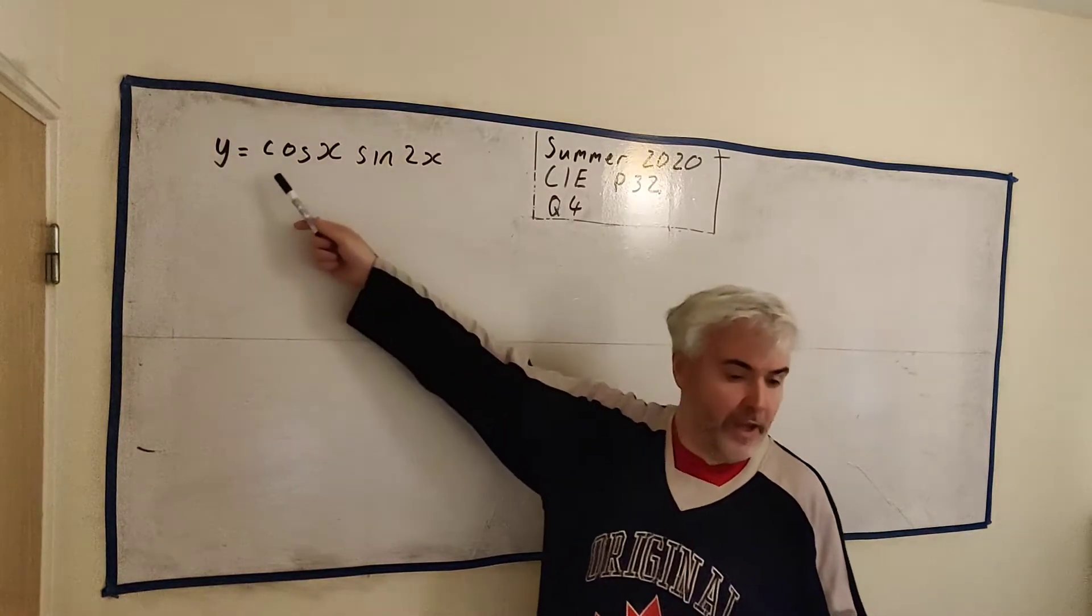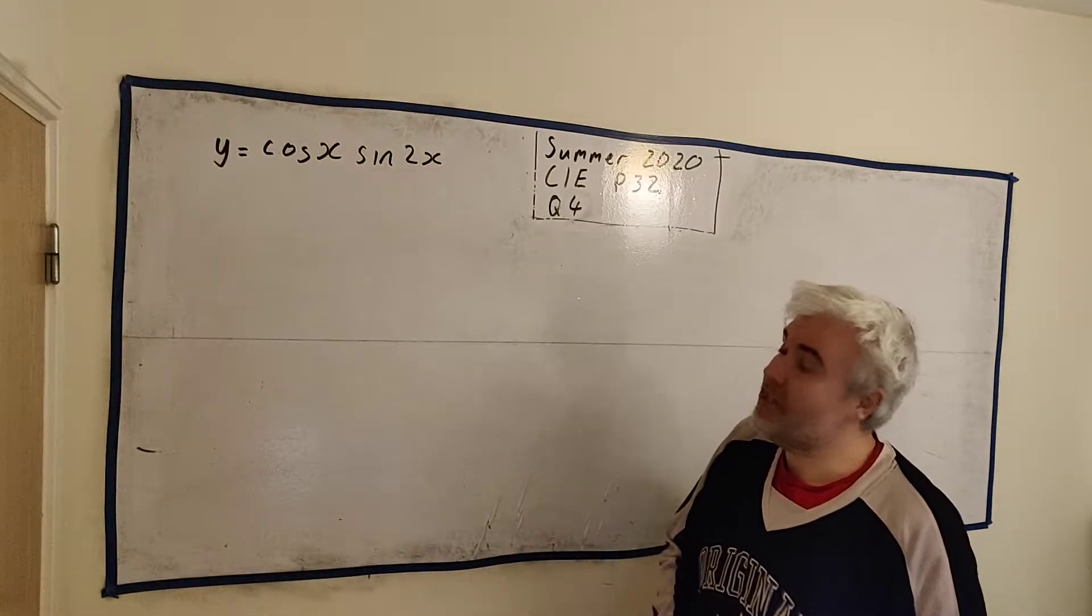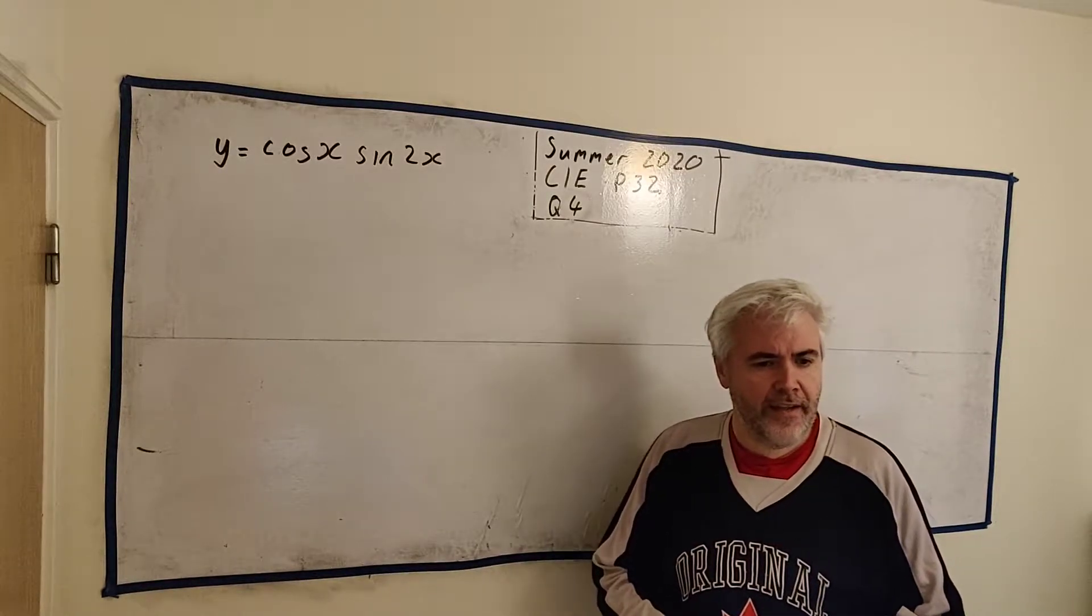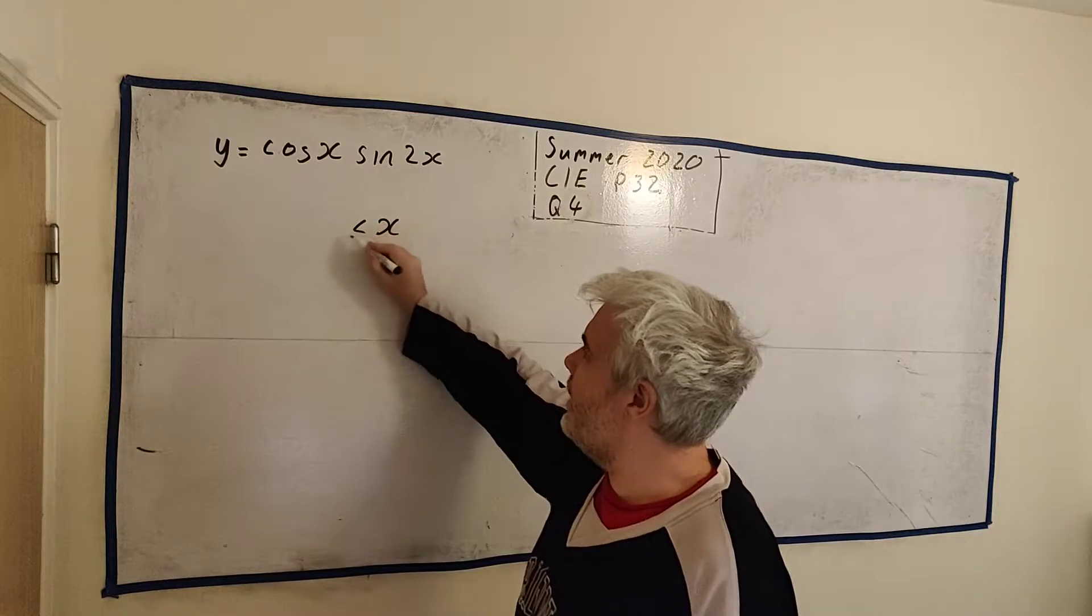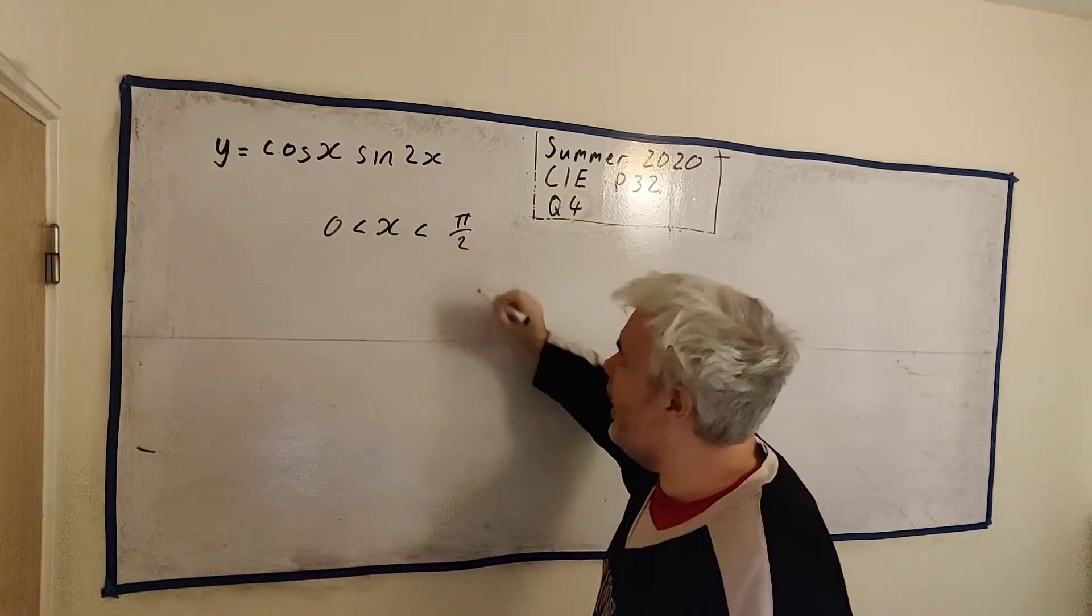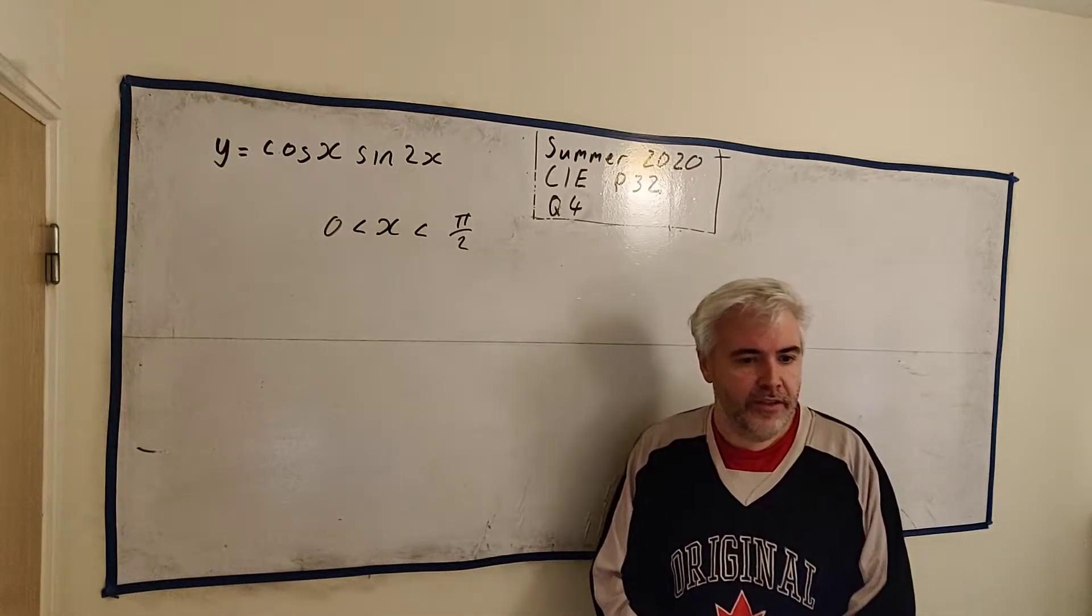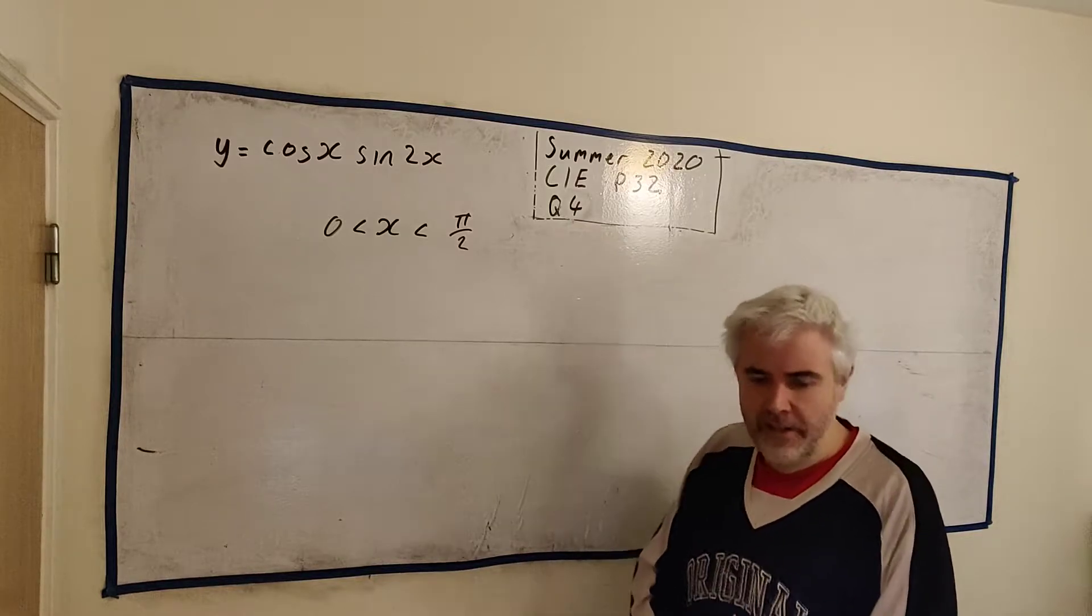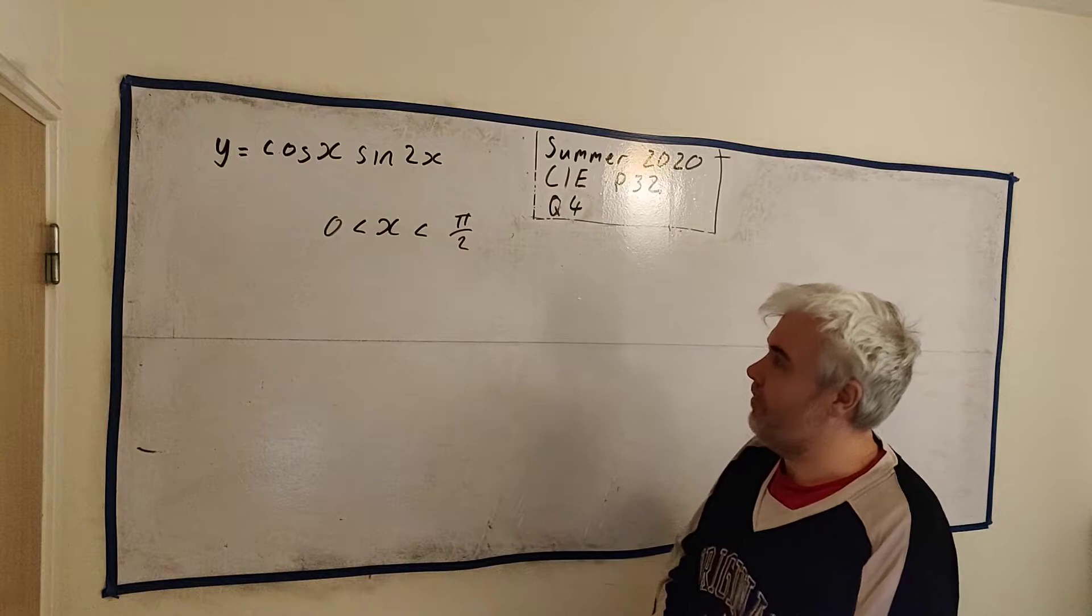This question gives us the equation of this curve here, y is equal to cosine x multiplied by sine 2x. And it tells us that it has a stationary point between the interval x is bigger than 0 and x is less than a half pi or pi over 2. And it wants us to find that stationary point, or just the x coordinate of that stationary point, giving the answer correct to three significant figures.